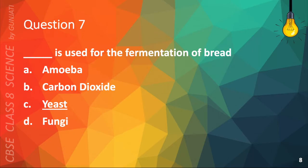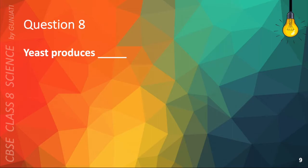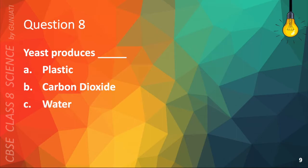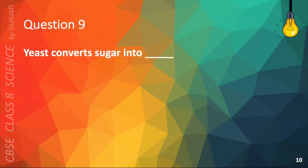Question 8. Yeast produces A. Plastic, B. Carbon dioxide, C. Water, or D. Nitrogen. The correct answer is B. Carbon dioxide.